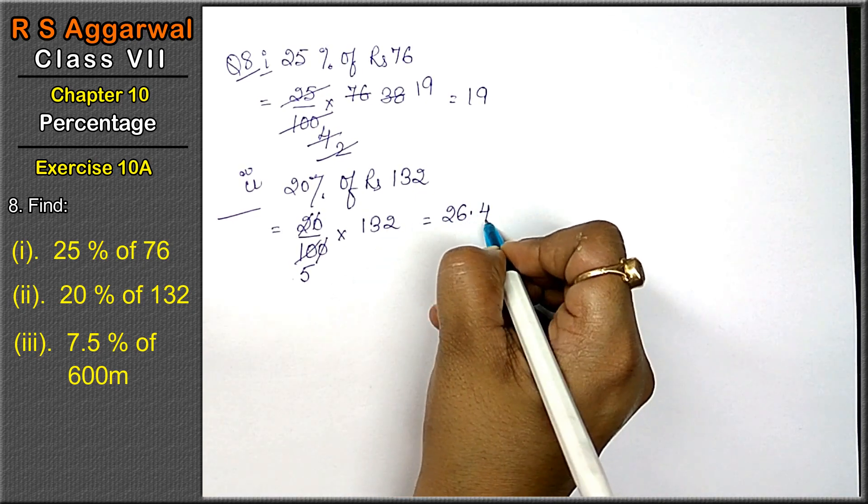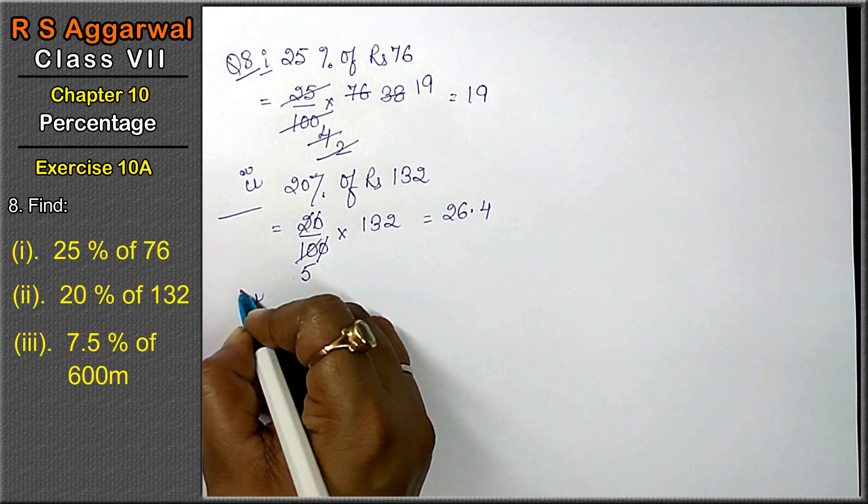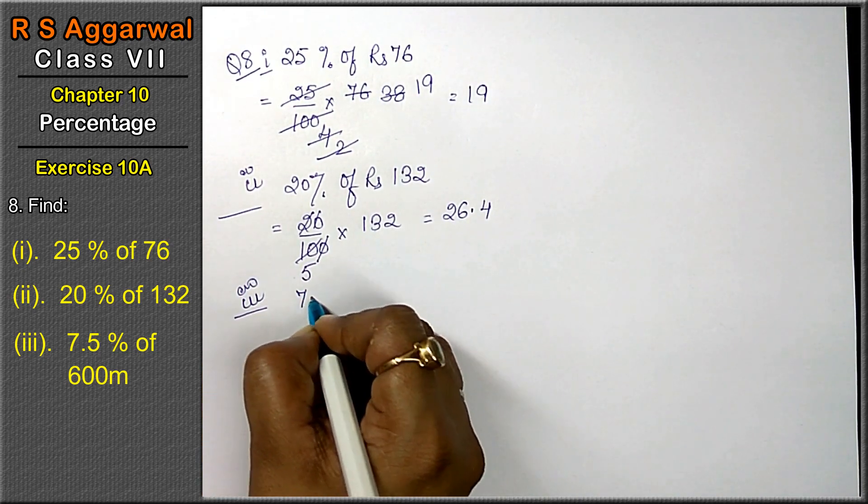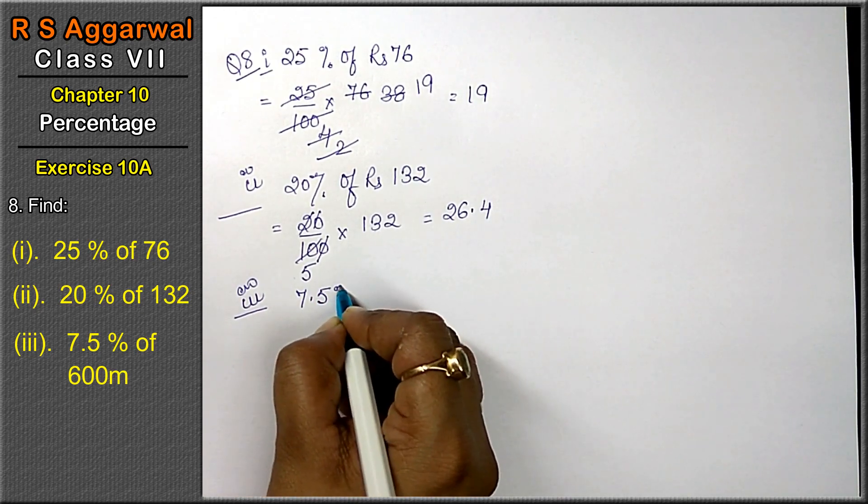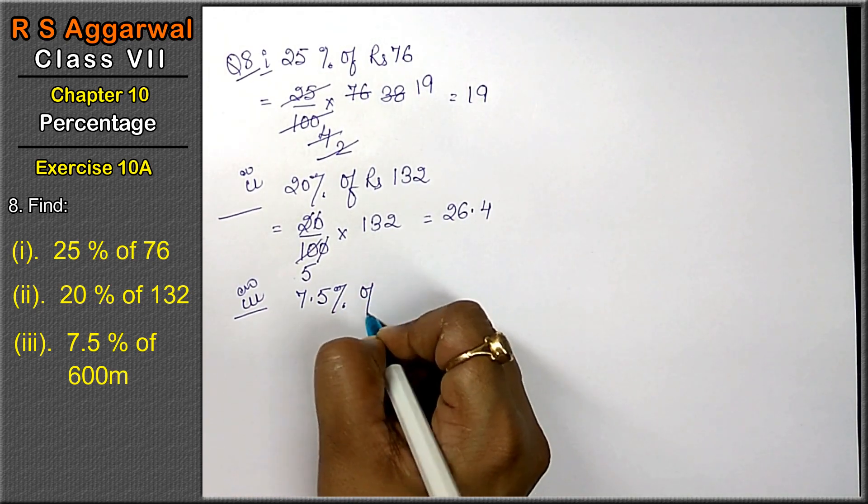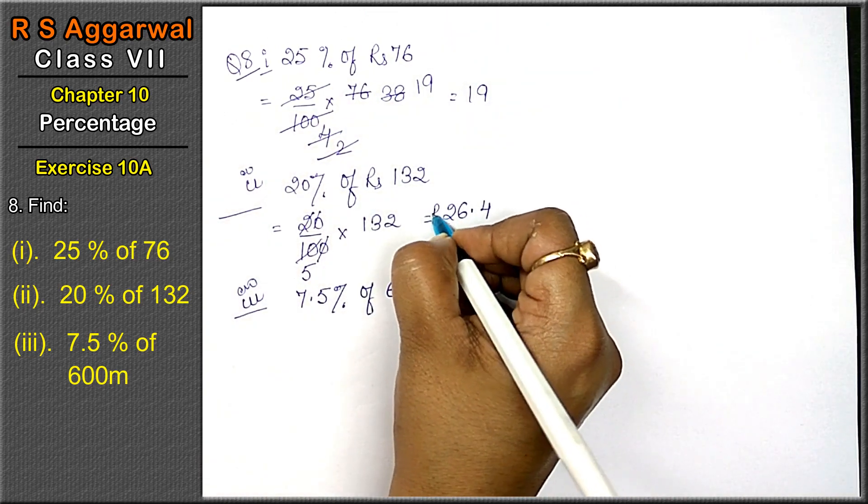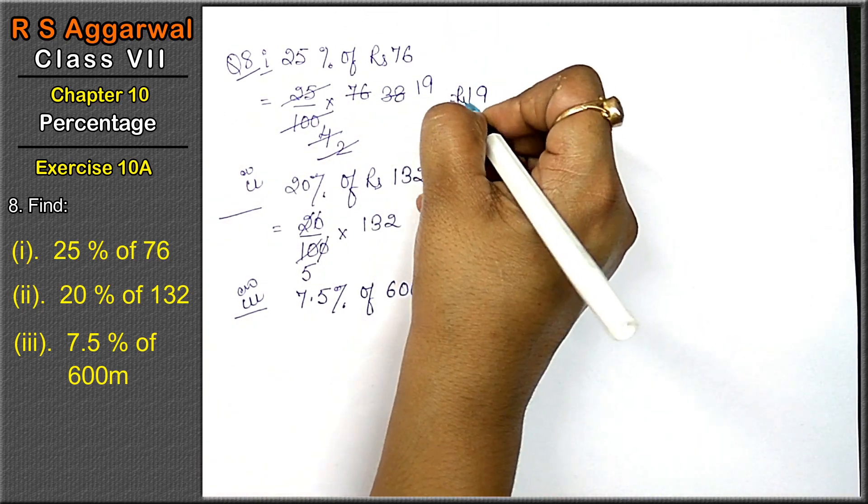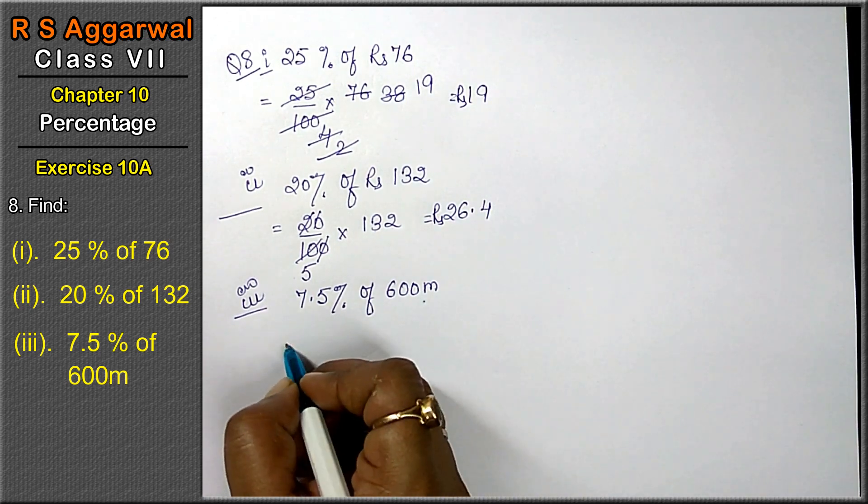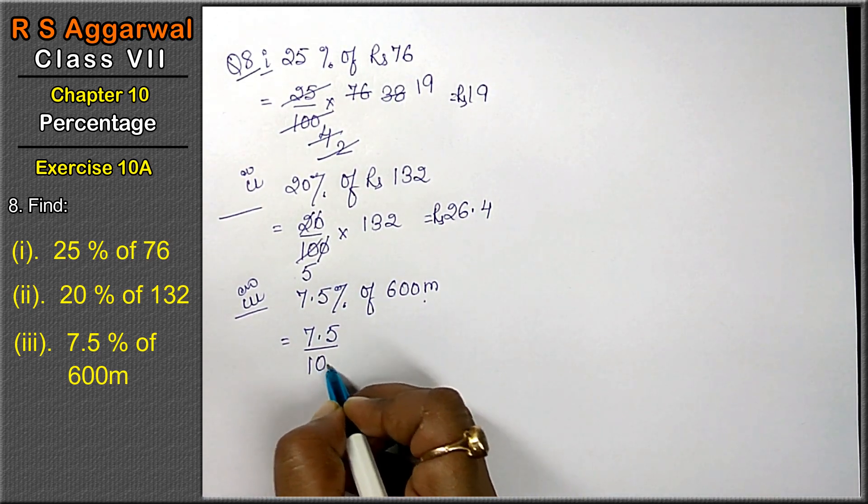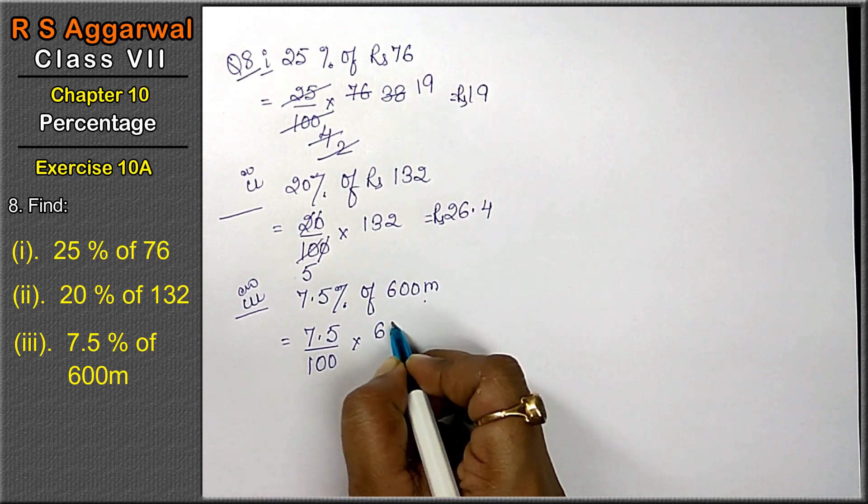Third part is 7.5% of 600 meters. Friends, if you use rupees, the answer will be in rupees only. If you use meters, the answer will be in meters. 7.5 upon 100 into 600 meters.